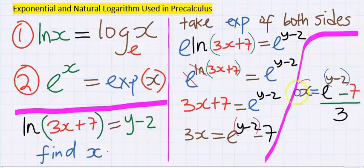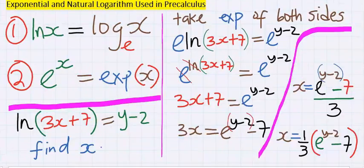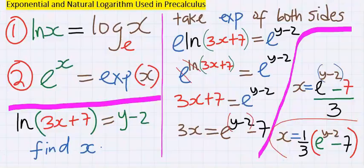x is now isolated and we can rewrite this in this order, which is our answer. In this example, you see how exponential neutralizes natural log.